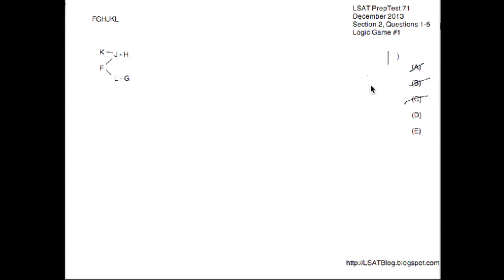Looking at D, K on four. Yeah, we could have F on one, L on two, G on three, then have K on four - works perfectly fine. So D is gone as well, leaving E by elimination. And if we look at E, K on five - well, there's no way that could happen, because we've always got to have at least two things after K, J and H. Because of that, K could never go as late as five. So for that reason, E is our answer to number one.